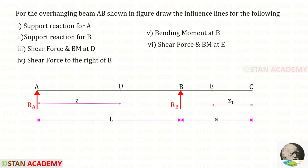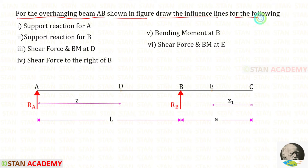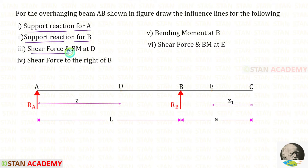Hello everyone. Today we are going to do a problem based on influence line diagrams. Let us read the question one time. For the overhanging beam AB shown in the figure, draw the influence lines for the following: support reaction for A, support reaction for B, shear force and bending moment at D, shear force to the right of B, bending moment at B, and shear force and bending moment at E.